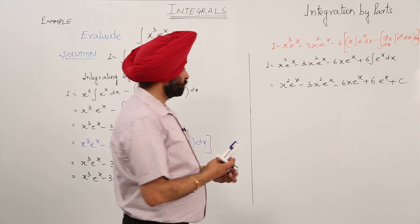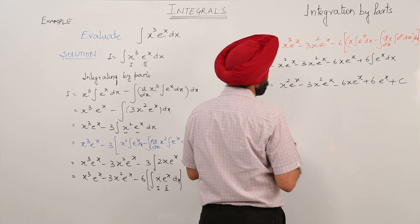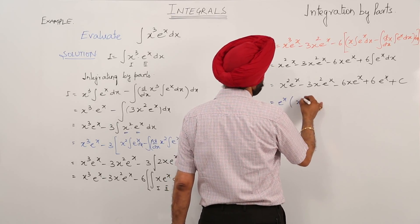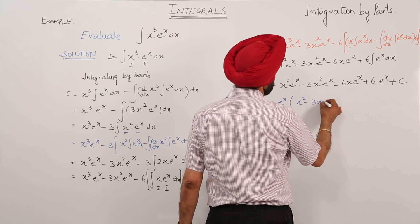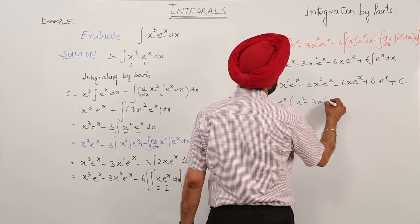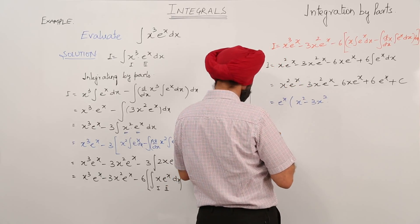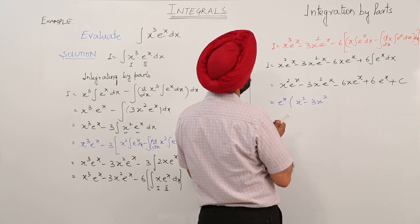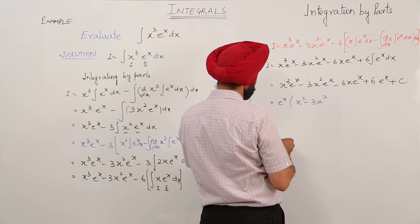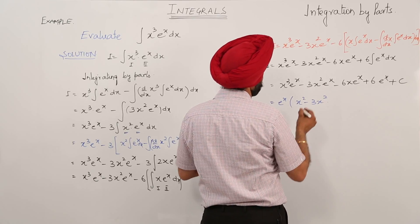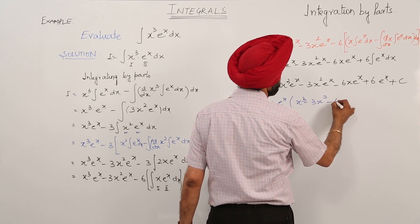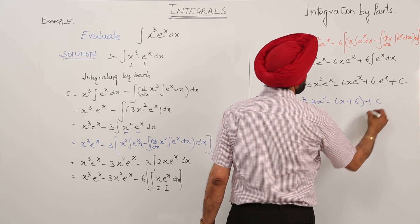Is it clear? So now finally, if you wish, you can take e raise to power x common and we are left with x cube minus 3x square minus 6x plus 6, plus c. This is the answer.